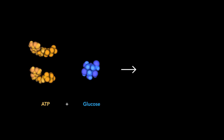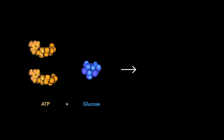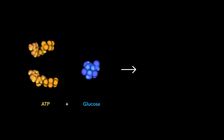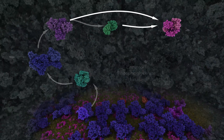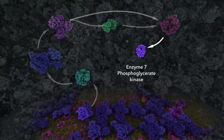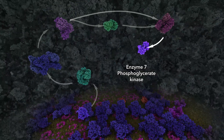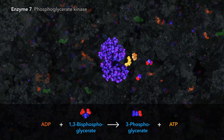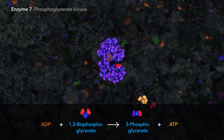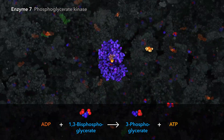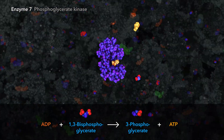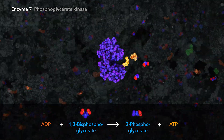Halfway through glycolysis, the cell has consumed two ATP molecules, breaking down glucose, and is now ready to capture energy in return. The seventh enzyme transfers a phosphate group from 1,3-bisphosphoglycerate to ADP, creating chemical fuel, ATP.